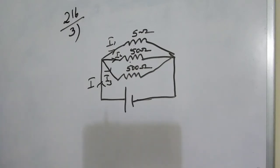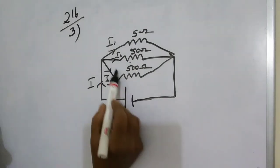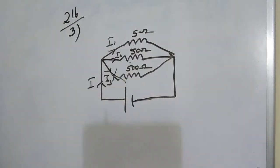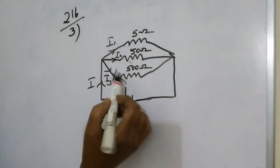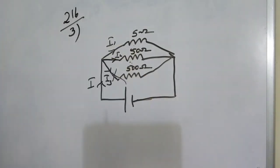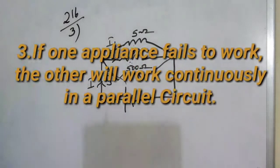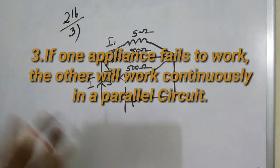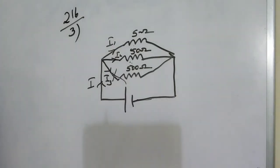The other advantage is that suppose if one appliance fails and is not working, the other two will continue to work. No matter how many appliances you are connecting, the others will work if one fails. This is also not possible in the case of a series circuit. These are the advantages of parallel circuit over series circuit.